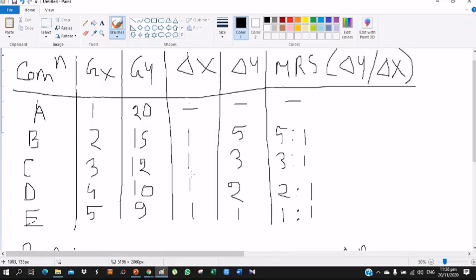So change in X and change in Y - what will they be? 1, 1, 1, 1 - that is, each time X increases by 1. And for Y it is 5, 3, 2, and 1. So if you want to find MRS, change in Y divided by change in X gives us 5 is to 1, 3 is to 1, 2 is to 1, and 1 is to 1.